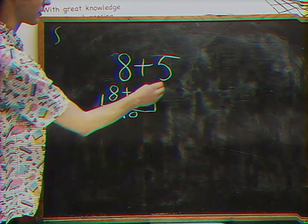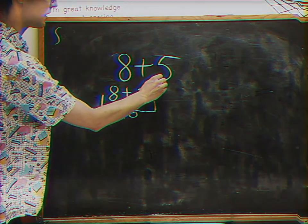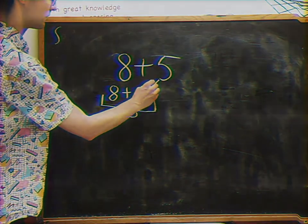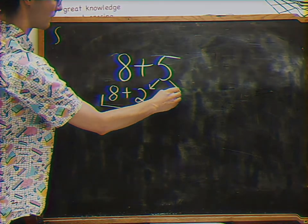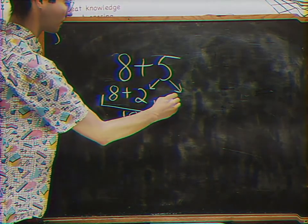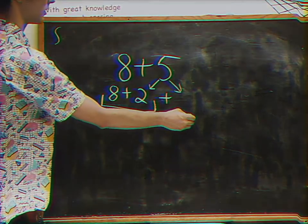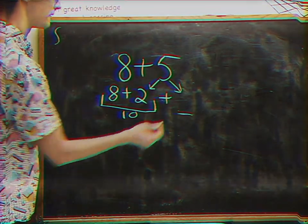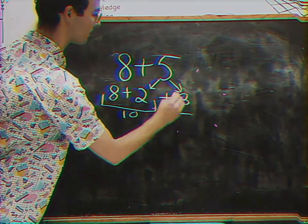So the next part is we're going to break this 5 up. We already know one of the numbers we're going to break it up into, and now we just need to figure out the other one. So 2 and what is going to make 5? Yeah, 3, that's good.